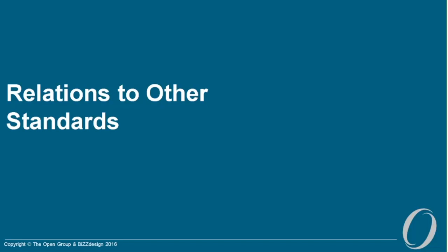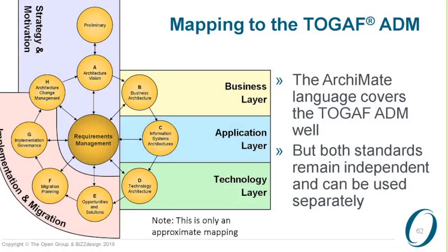We also expressed the relationship to other standards a little bit better. Of course there's TOGAF — the mapping to the TOGAF ADM was in there and that's still there. As you can see in this picture, we now added strategy there, which plays a main role in the preliminary and architecture vision phases of the ADM. But this structure is now in an appendix about more than just the TOGAF standard. They're still both independent and we can use them separately, so no need to be fixed on TOGAF, but it's still very useful to show this correspondence.